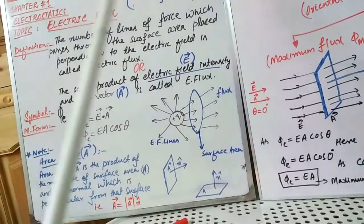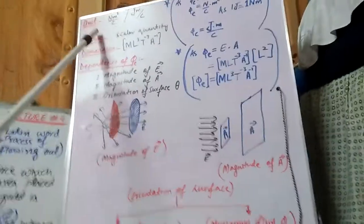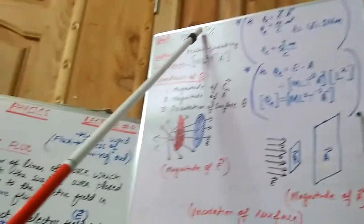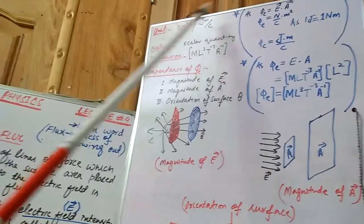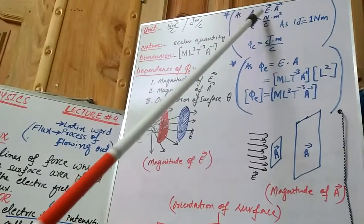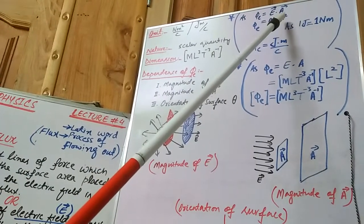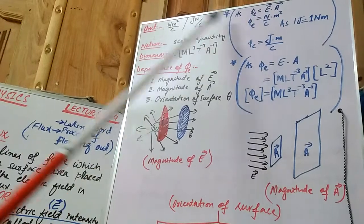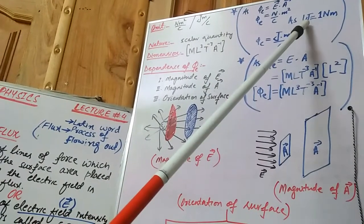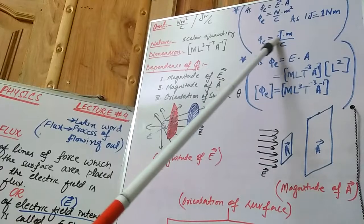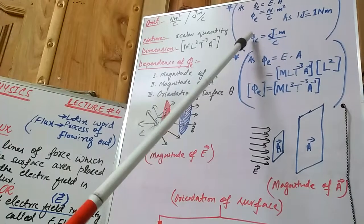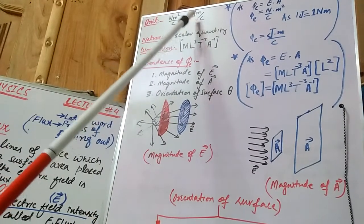Moving to the next point: the unit of electric flux. The unit of electric flux is Newton meter squared per coulomb (N·m²/C). Another unit that can be used is Joule meter per coulomb (J·m/C). Since electric flux equals E dot A, the unit of electric field is N/C and the unit of area is m², giving N·m²/C. Since one Newton meter equals one Joule, we can also write the unit as J·m/C. Both units can be used for electric flux.